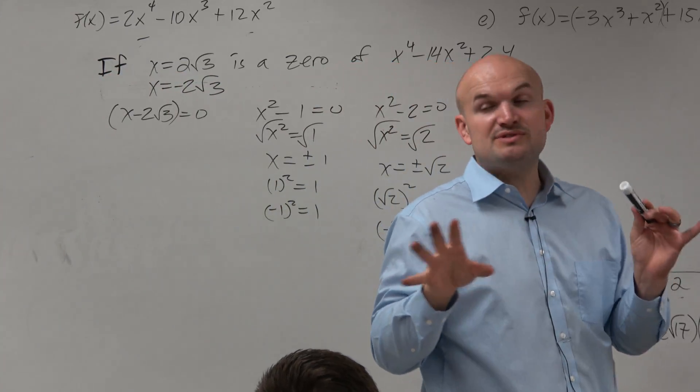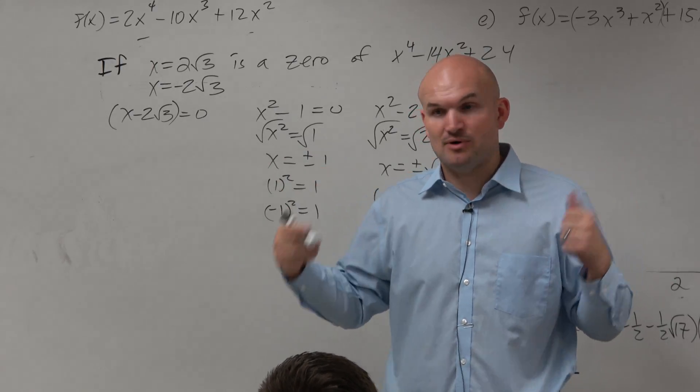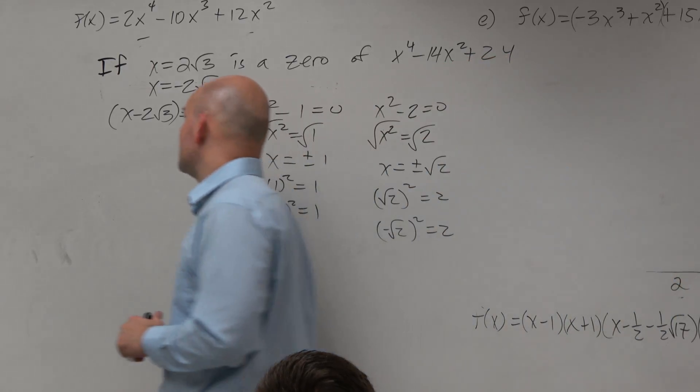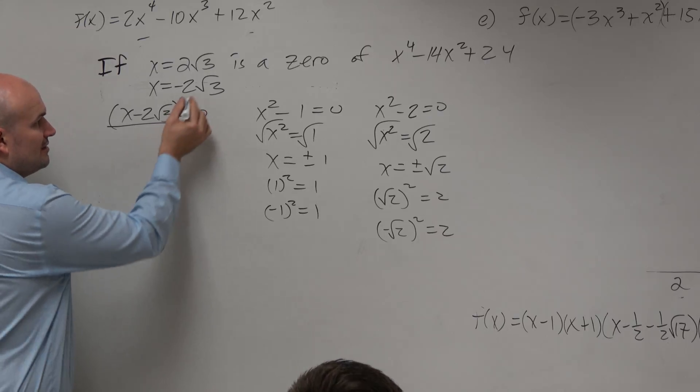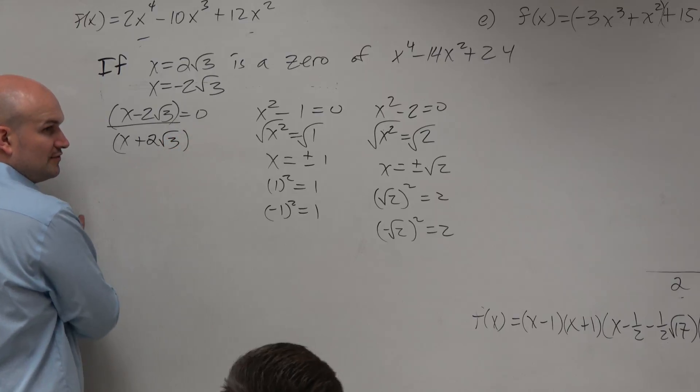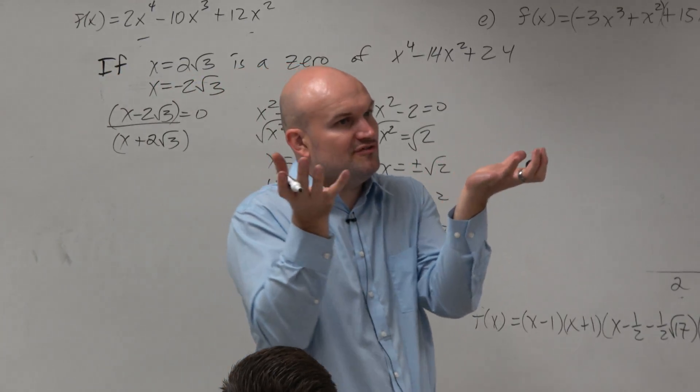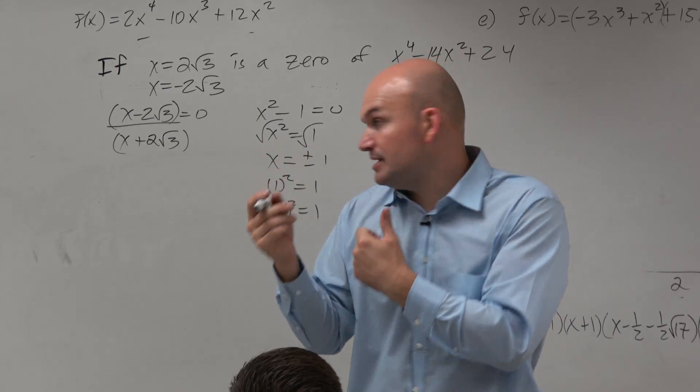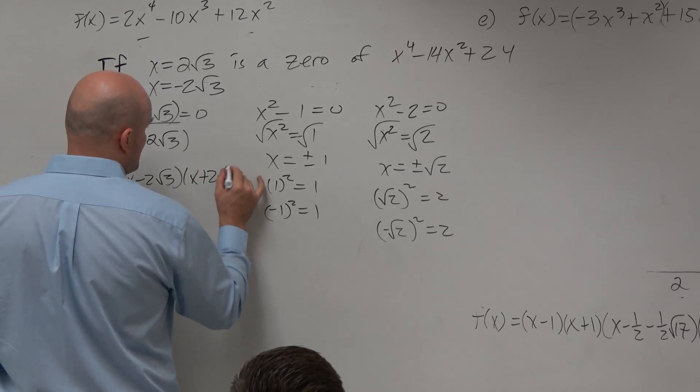So if you wanted to do synthetic division, you would do it just like we did in the previous example with those two zeros. I don't prefer to do synthetic division in this example. What I prefer to do is say, if that is my one factor, then this factor would be x + 2√3. And therefore, you could take the two factors, x - 1, x + 1, and multiply them. You can do the same thing here.